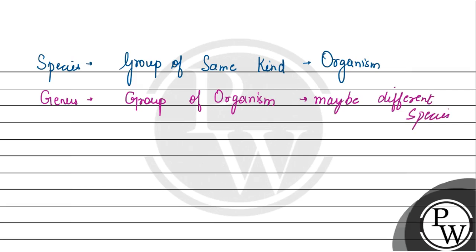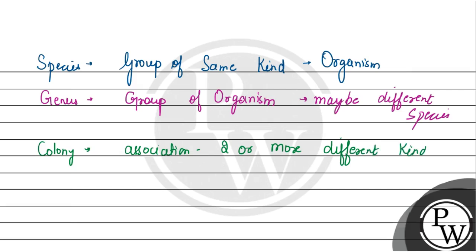If we talk about colony, the colony is usually an association of two or more different kinds of organisms which are together and share the same kind of mutual relationship.